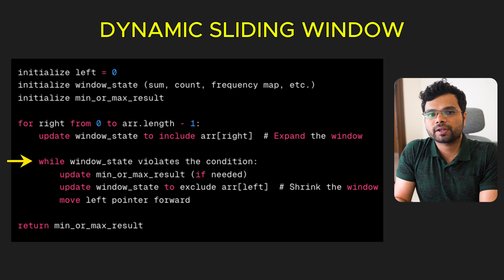While the current window violates the condition, shrink it by excluding and advancing the left pointer until it becomes valid again. Update the window state and result accordingly.